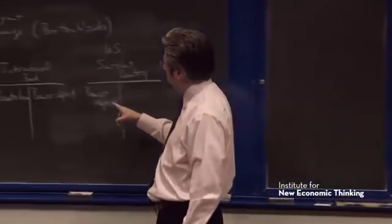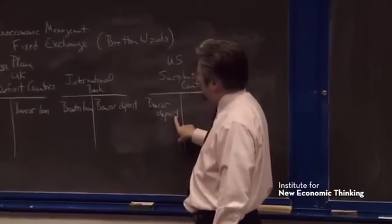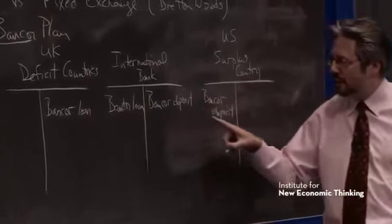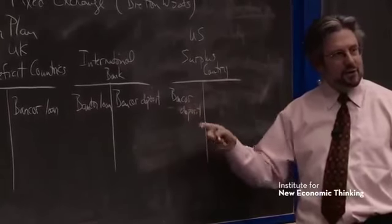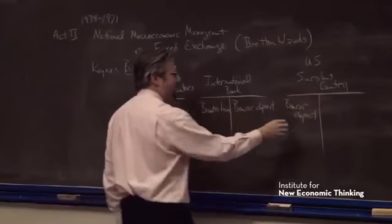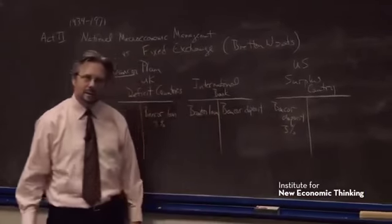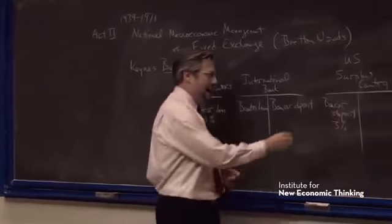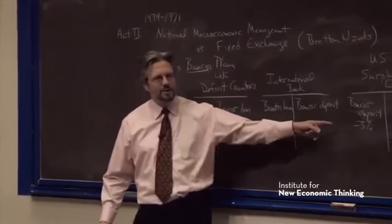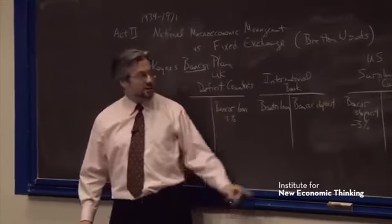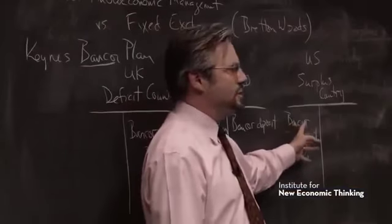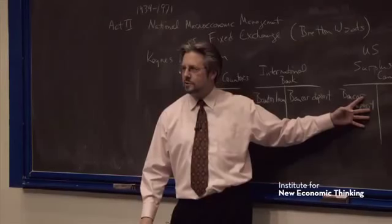And so Keynes had actually proposed that we charge an interest rate on this loan and we also charge an interest rate on this deposit. So that instead of passing through 3%, you actually charge 3% on the deposit. In order to encourage the United States to spend this money here, to buy goods in Europe. This is money that if you hold onto it, it's just going to lose value, so you should spend it.